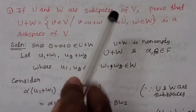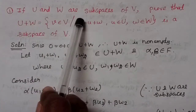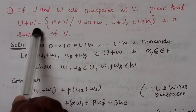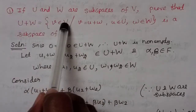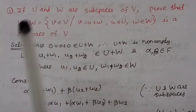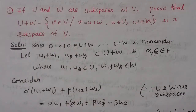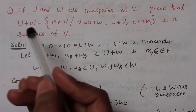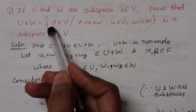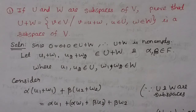V is a vector space with two subspaces. The addition of two subspaces will be defined, and the addition of two subspaces is again a subspace.